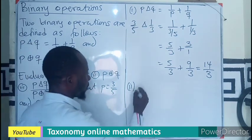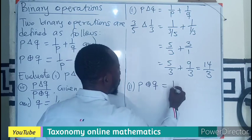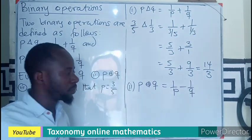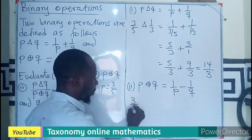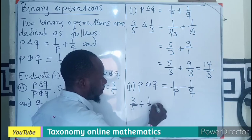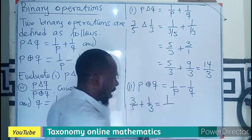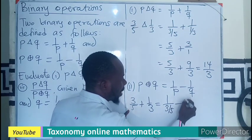Which is going to be P plus operator on Q, which is 1 over P minus 1 over Q. Now let's change the value of P to 3 over 5 and that of Q to 1 over 3.